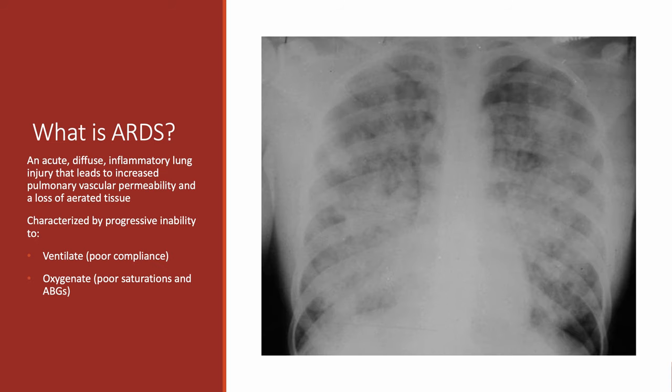ARDS is an acute diffuse inflammatory lung injury that leads to worse pulmonary vascular permeability and loss of aerated tissue. Take a look at this chest X-ray — you see patchy white infiltrates everywhere. You're supposed to see black where the lungs are, but instead we see these patchy white infiltrates, which is pathognomonic of ARDS when combined with more difficulty ventilating patients and oxygenating them.